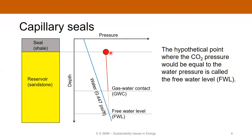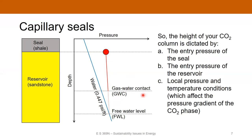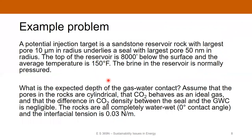So if you want to figure out what the thickness or height of the CO2 column is between the seal and the gas water contact, you just need to know how quickly the CO2 pressure increases with depth — that is, the entry pressure of the seal, the entry pressure of the reservoir, and the local pressure and temperature conditions which are going to affect the CO2 density. Let's do an example problem. We've got a potential injection target, which is a sandstone reservoir in which the largest pore has a radius of 10 microns, lying beneath a seal with a largest pore of 50 nanometers in radius.